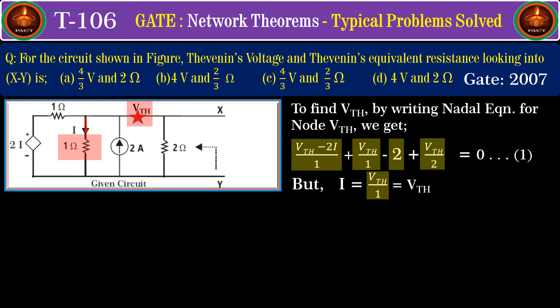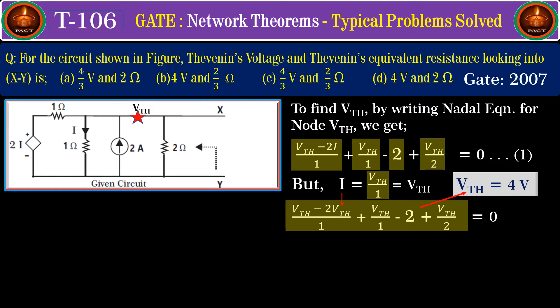Substituting the value of i into the nodal equation and solving, we get VTH equals 4 volts. To find the Thevenin's resistance, because the network contains a dependent voltage source of 2i volts, we use the test voltage method.